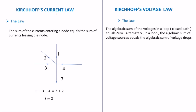With Kirchhoff's law there are two laws: one is the current law and one is the voltage law. The current law states that the sum of the current entering a node equals the sum of the current leaving. A node is a point where currents join. The sum of currents leaving the junction should equal the sum of currents coming in. In an example, I plus 3 plus 4 — those are the currents coming in or joining at the node.